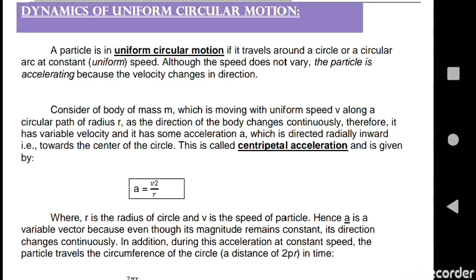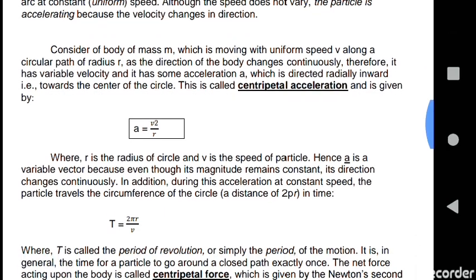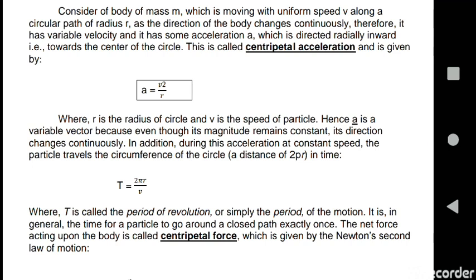In addition, during this acceleration at constant speed, the particle travels the circumference of the circle in time. As we know, ω = v, and the circumference is 2πr, so T = 2πr/v. T is called the period of revolution.